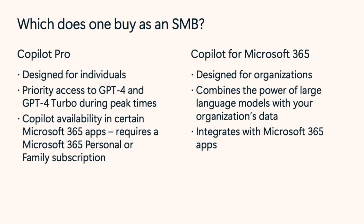So which does one buy as an SMB? Copilot for Microsoft 365 is a great choice for small and medium-sized businesses due to its integration with Microsoft 365 apps. If your business already uses Microsoft 365 for productivity and collaboration, having Copilot directly accessible within those apps streamlines your workflow. You can generate text, get contextual information, and enhance your productivity without switching between different tools. Copilot for Microsoft 365 provides additional contextual information — it understands the context of your work within the Microsoft 365 document, making it more relevant and useful.